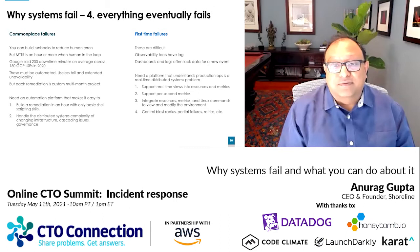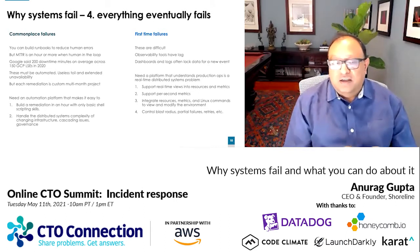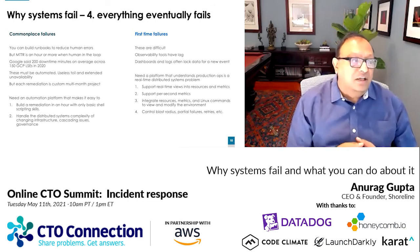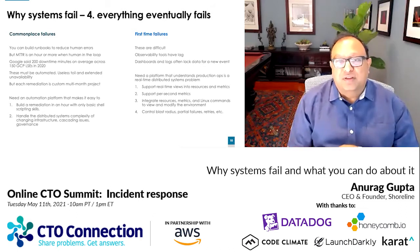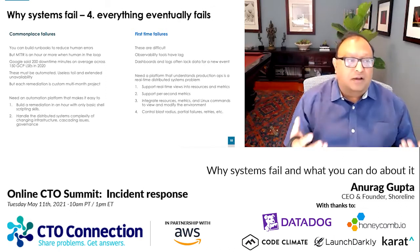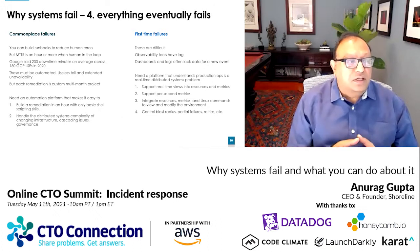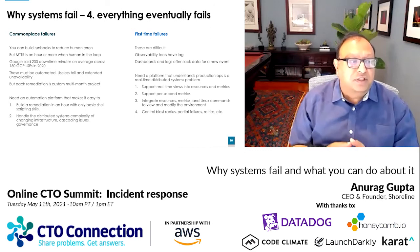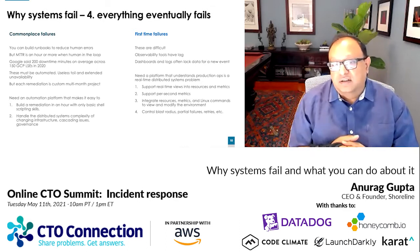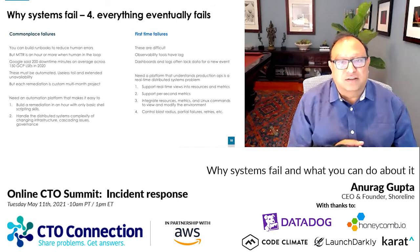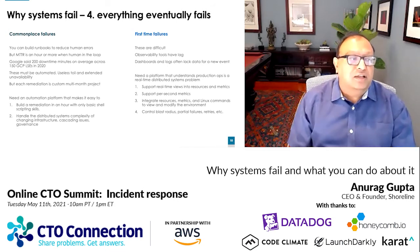Everything eventually fails. There are commonplace failures and first-time failures. For commonplace failures, many of us build runbooks to reduce human errors. But the problem is there's still a human in the loop, and intrinsically that's going to take an hour or two in terms of reaction time, even for a well-understood issue like a full disk. Google said that on average there were 200 minutes of downtime across 150 large-scale events in GCP last year. The only way around that is to automate.